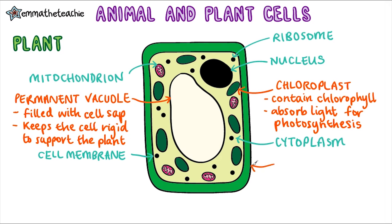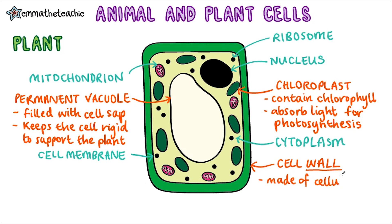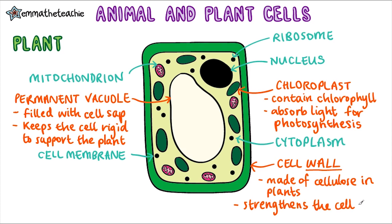Down here we've got the outer layer, which is the cell wall. My trick to remembering this is that the wall is always the outside layer of your house, and it's the same in a plant cell — it's on the outside. In plants it's made of cellulose, but in fungi it's made of a different material. Just like the wall of your house, it strengthens it and gives it support, so it's really vital.